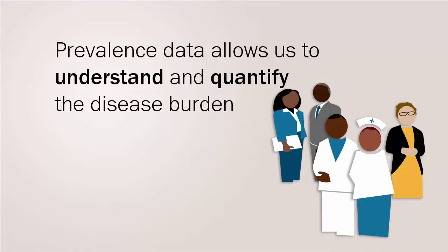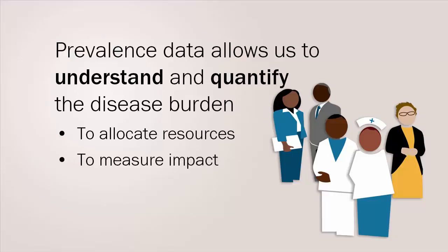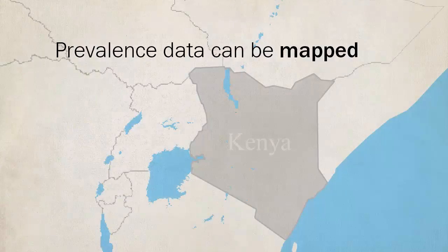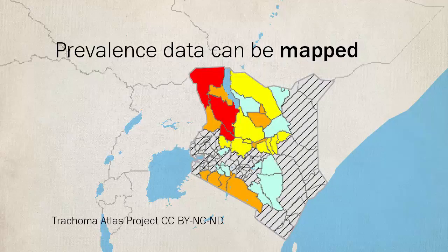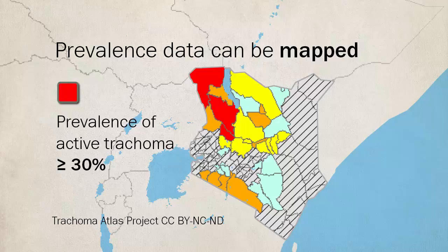Prevalence data allows us to understand and quantify the disease burden and health outcome. Health workers can use this information to allocate resources appropriately. They can also use it to measure the impact of health services by collecting prevalence data before and after a health intervention — for example, how much of a change did providing cataract surgery have on reducing blindness in a given population? Prevalence information can be mapped to show where the need is greatest, as shown in this trachoma map, where areas with the most prevalent active trachoma will benefit from mass distribution of azithromycin.